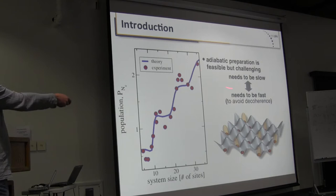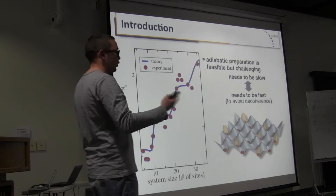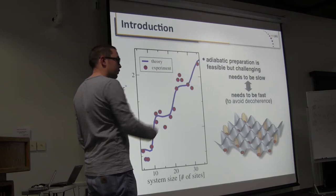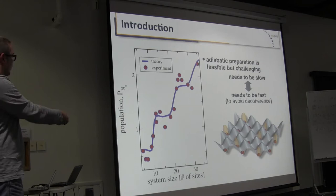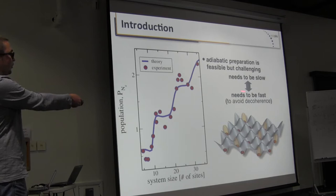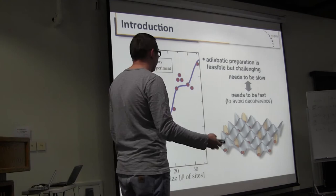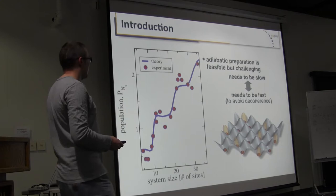So the take-home message of the first lecture was that there is a way to create some ordered states - hopefully long-range ordered states - and eventually change the ground state of the system in a fully coherent fashion. It seems experiments can do this to some extent, but it's still quite challenging, because you have to be slow in order to stay in the ground state as you change your parameters, but at the same time you also have to be fast enough to avoid decoherence or spontaneous decay.